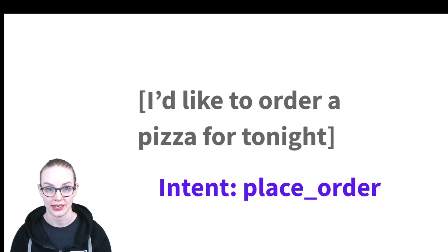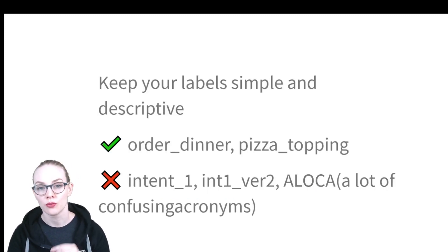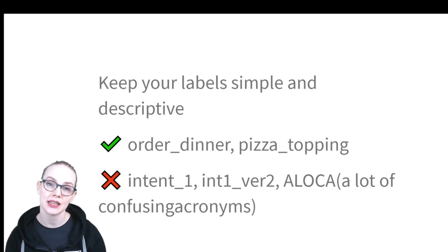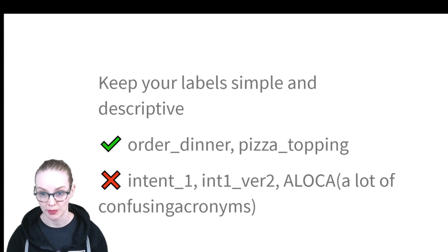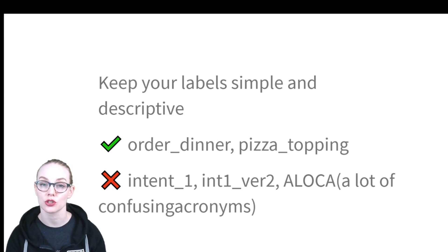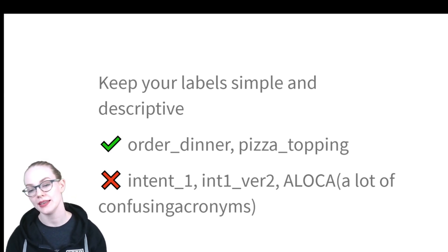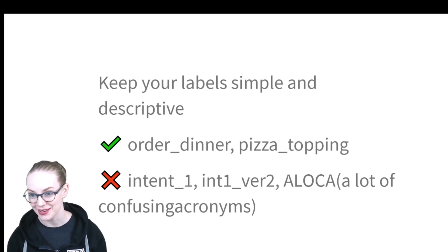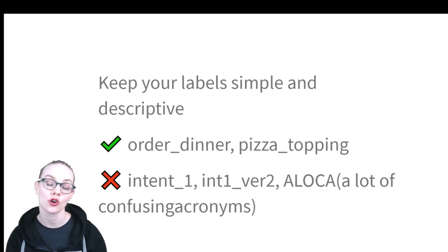Let's talk about some tips and tricks to make data annotation go smoothly. One really important thing you can do to make life easier for annotators and developers is to keep your labels simple and descriptive. So 'order dinner' and 'pizza topping' are pretty straightforward labels that describe what you're annotating. Things like 'intent one into one underscore ver two' or confusing acronyms make it harder to quickly apply and check labels.